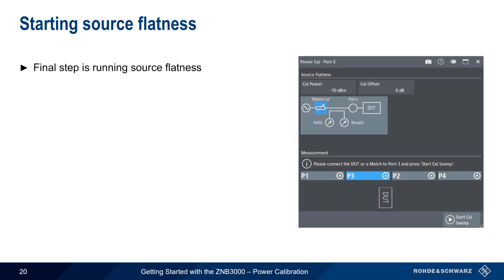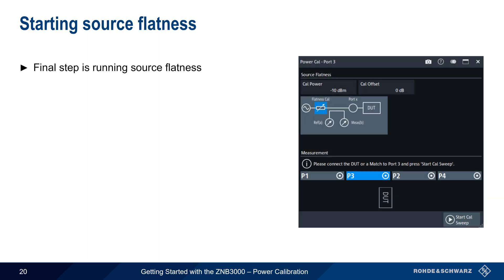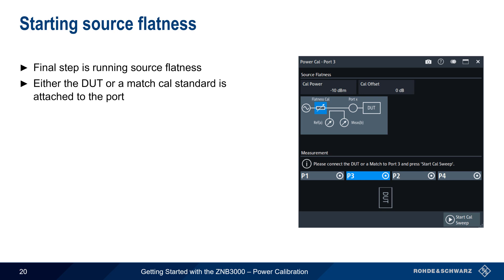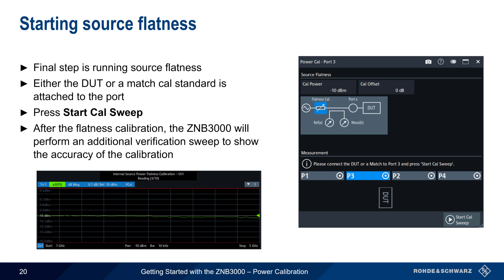The final step in power calibration is running source flatness. This can be done by either connecting the DUT to the port or by attaching a match calibration standard. Simply press Start Cal Sweep and follow the prompts. After the flatness calibration is completed, the ZNB3000 will perform an additional verification step to show the accuracy of the overall calibration.